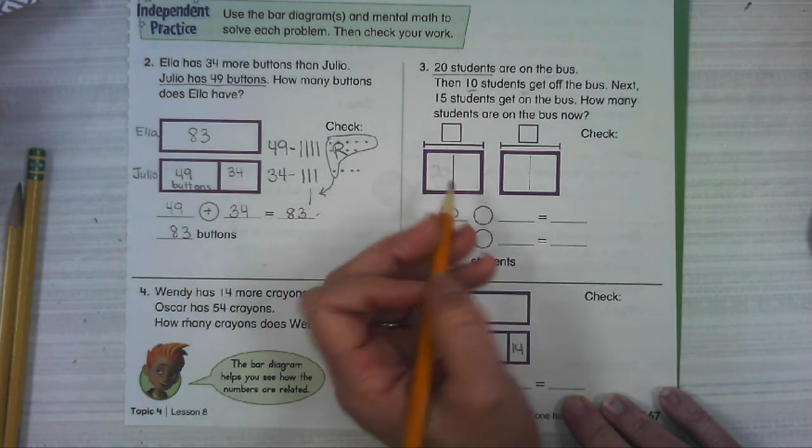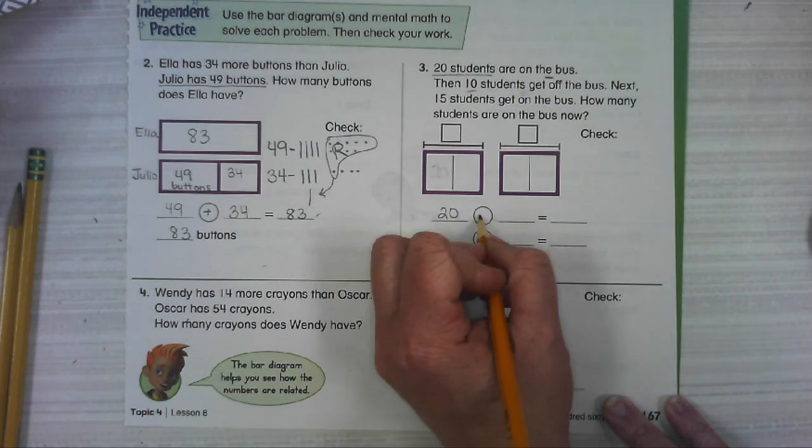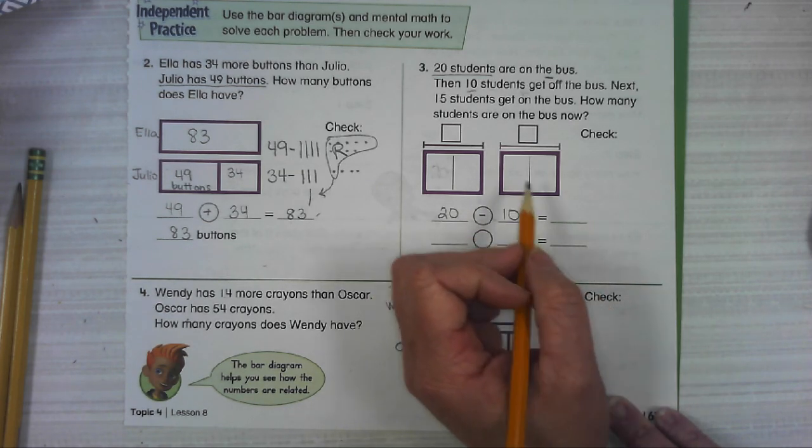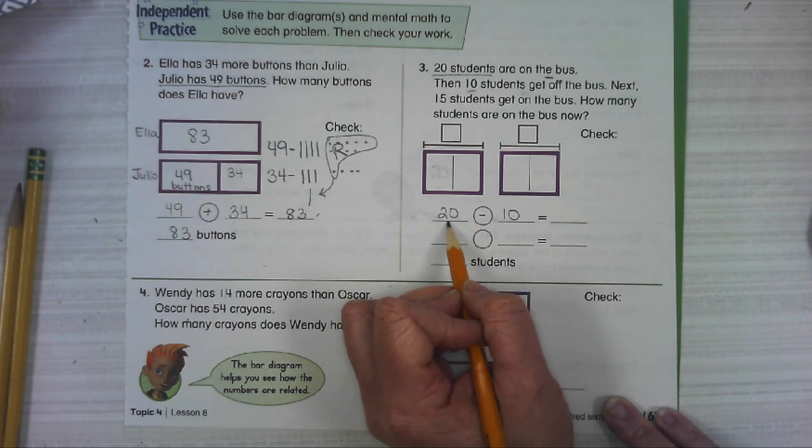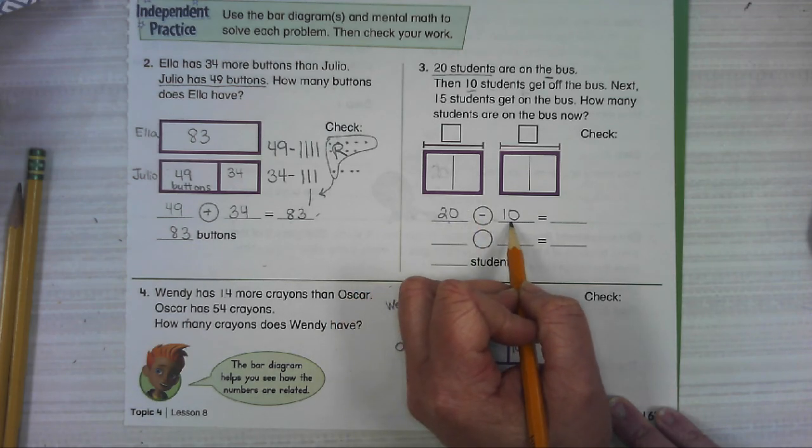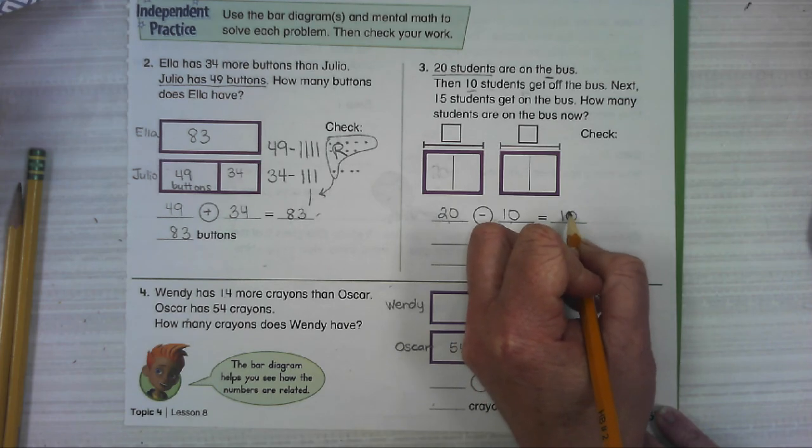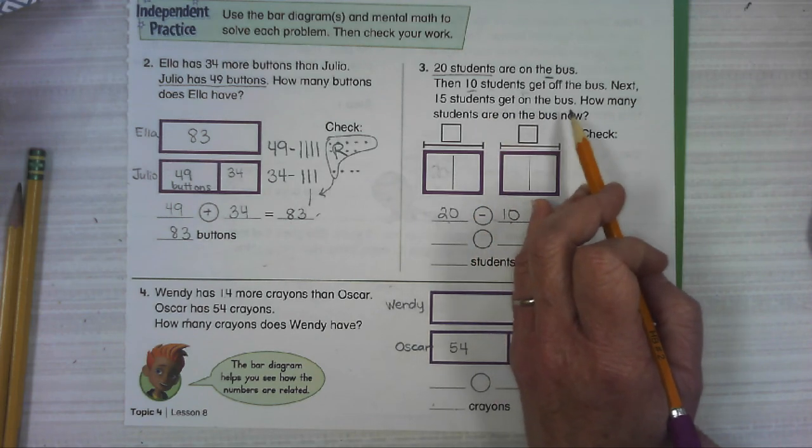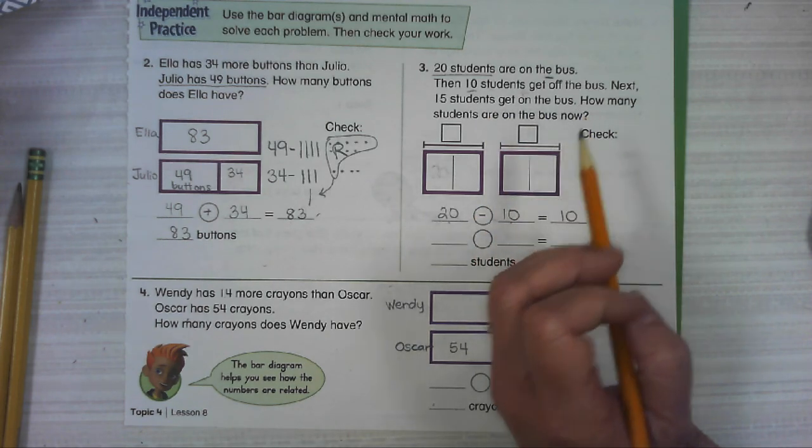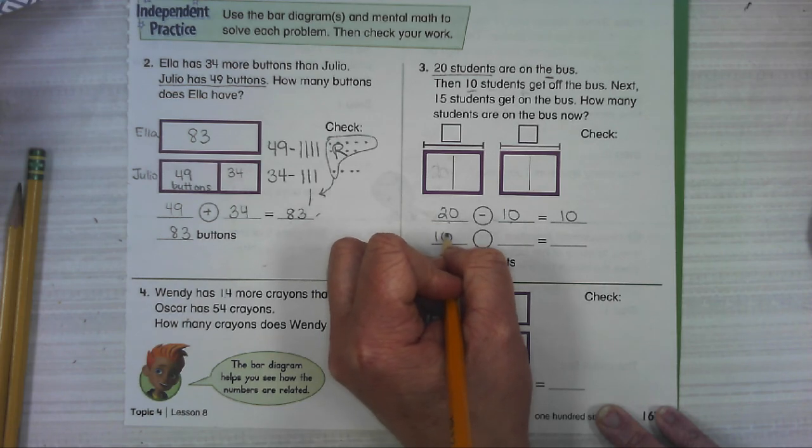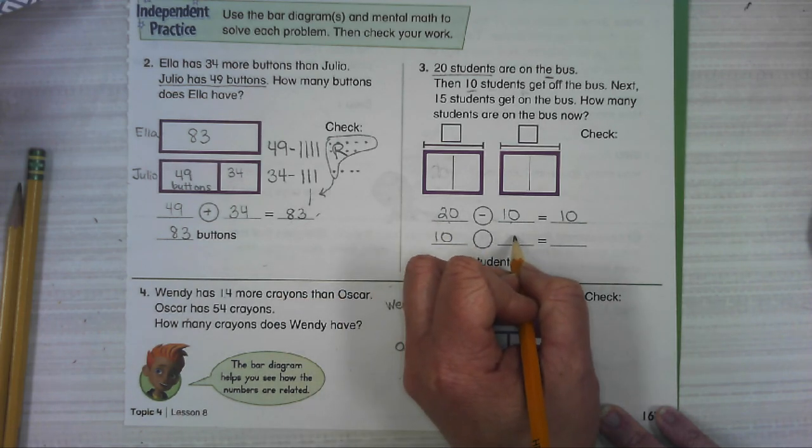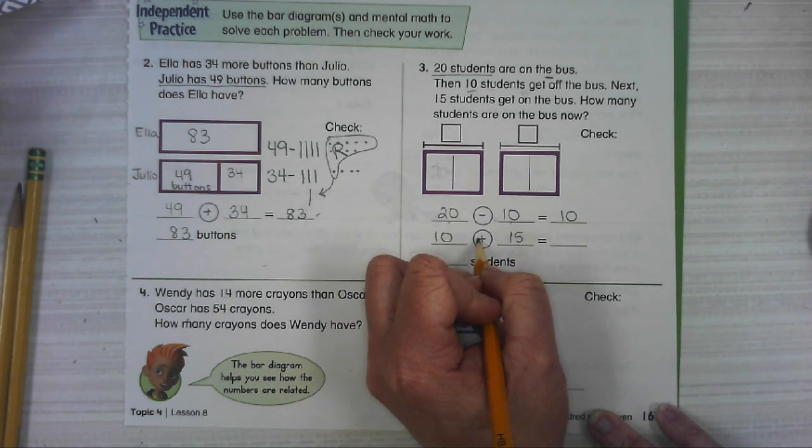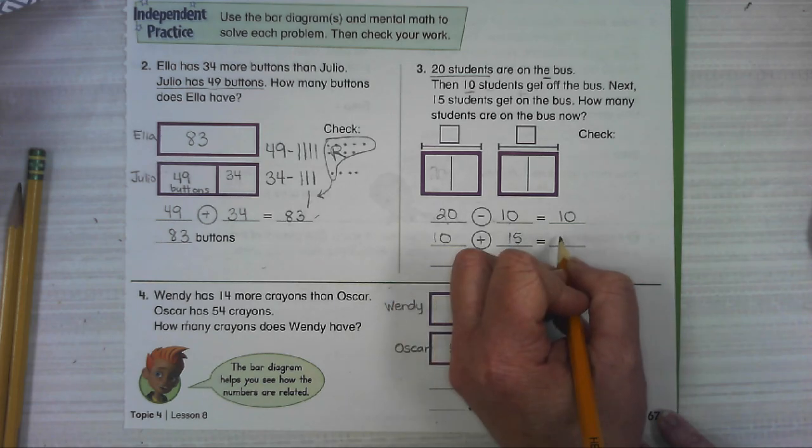10 students get off the bus. That's subtraction. Okay, it doesn't ask us how many we have right now, but let's go ahead and figure it out. If we had 20 kids on the bus, 10 of them got off. That means we have 10 students still on the bus. Next, 15 students get on the bus. So we're starting with our 10, because that's what's on the bus now. We've got 15. Are we going to add them or subtract them? We're going to add them because they're getting on the bus. 10 plus 15 equals 25.